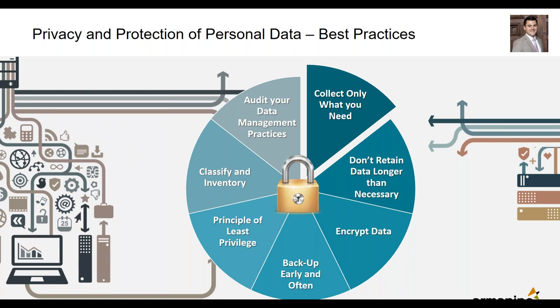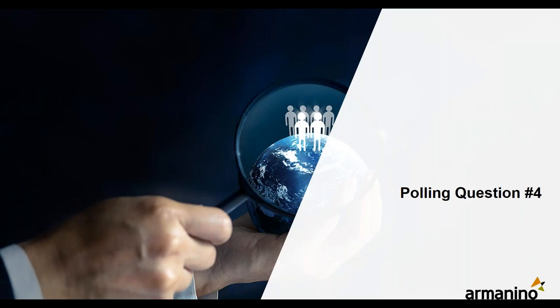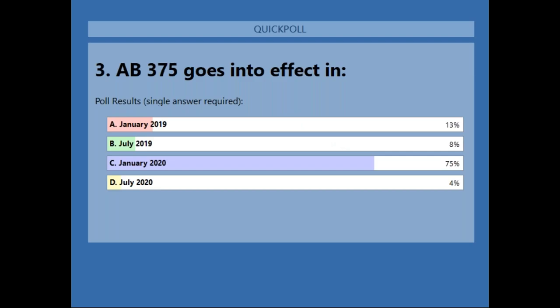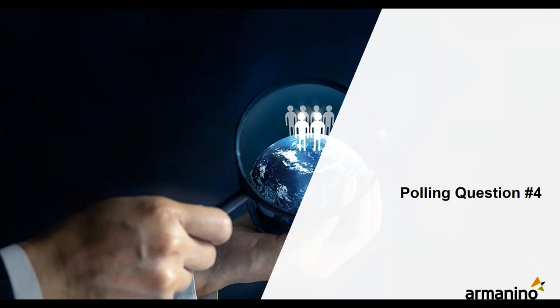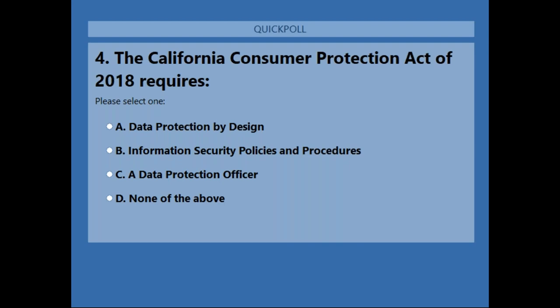We're running up against time, so we're going to jump into the last polling question, and then leave the rest of the content in the appendix for you all. The last polling question is: the California Consumer Privacy Act of 2018 requires A, data protection by design; B, information security policies and procedures; C, a data protection officer; or D, none of the above. We'll give you a few seconds for that.